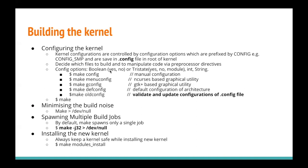We have different options to configure the kernel. The first is make config — the manual way, where it prompts for each configuration option to say yes, no, or tri-state. make menuconfig is an ncurses-based graphical utility where you can choose which configurations to keep. make gconfig is a GTK-based graphical utility. make defconfig is the default configuration for a specific architecture. If you don't know what you're changing, you can keep the default configuration, or you can also change the .config file directly. After changing the file, you can run make oldconfig to validate and update the configurations.